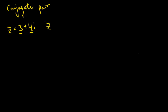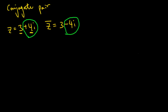We denote the conjugate as z-bar. So z-bar equals 3 minus 4i. The only difference between the original complex number and its conjugate is the sign change in the imaginary part — we don't change the real part at all. For example, if w equals negative 3 minus 5i, then w-bar equals negative 3 plus 5i.